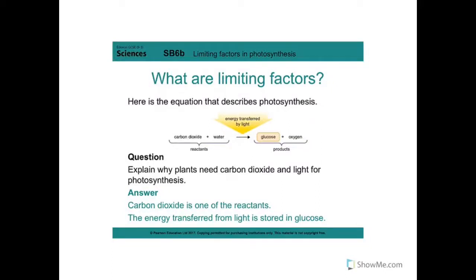Lesson two is about limiting factors. These are things that, if there's not enough of them, will slow down photosynthesis. But if there's more of them, it will increase the rate of photosynthesis. There are lots of key words we need to understand, like rate and what limiting factors are.